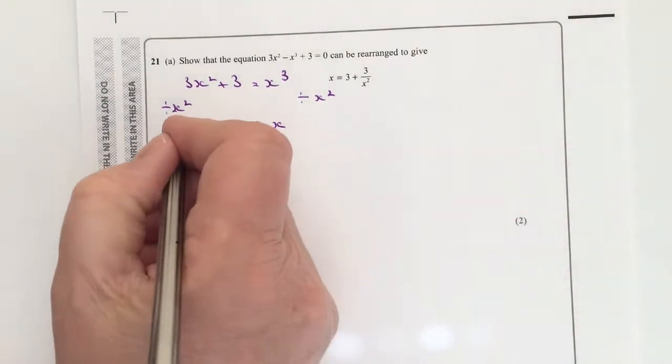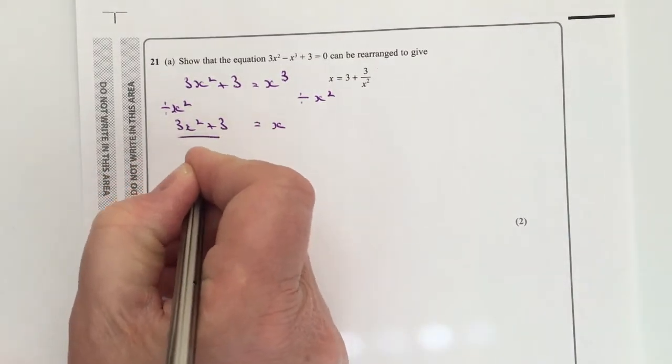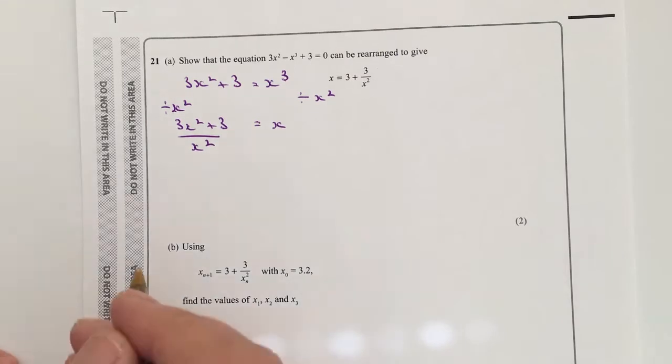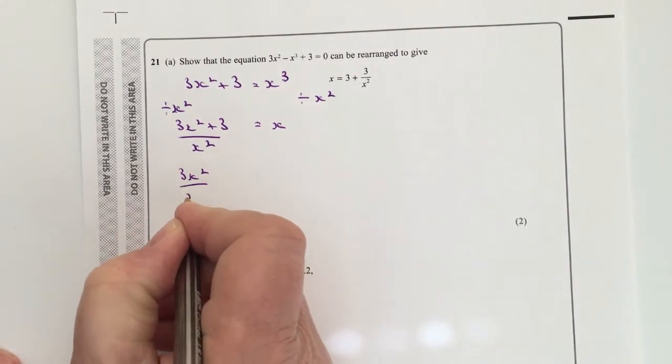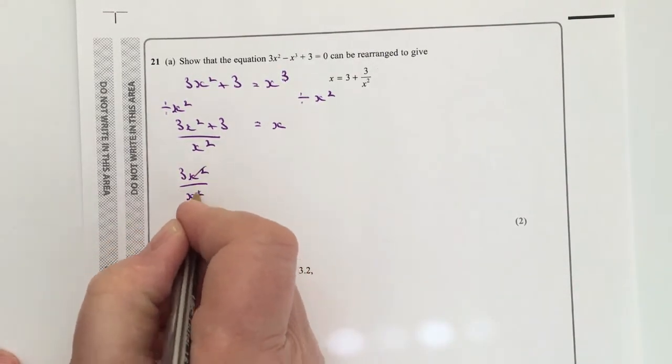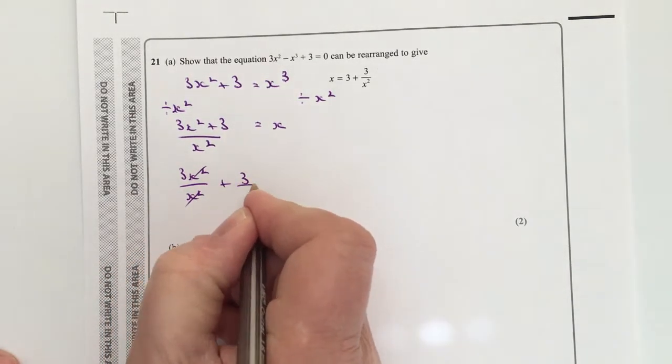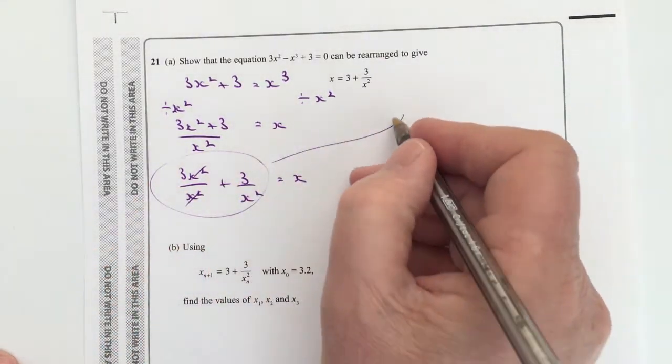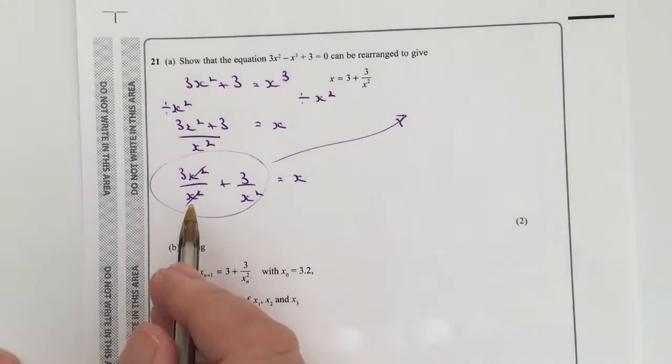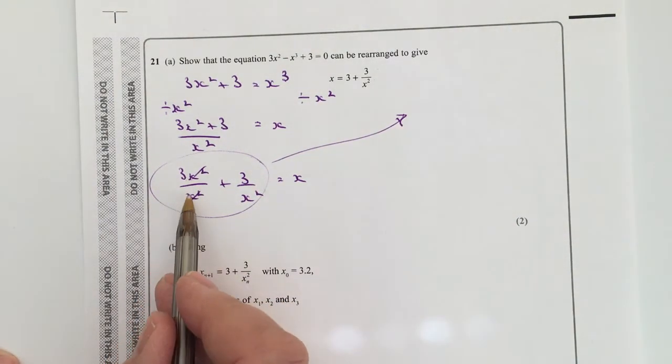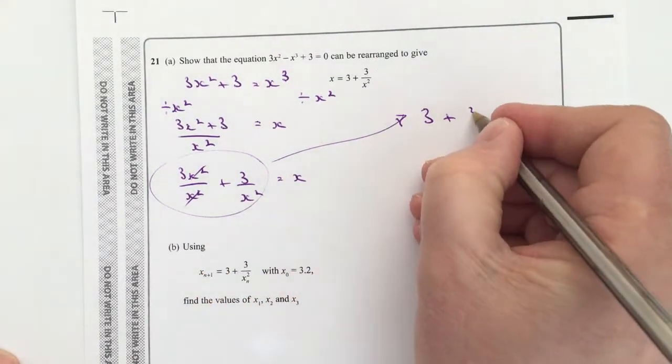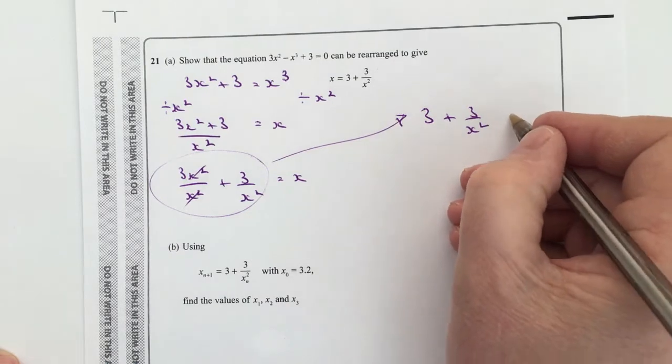On the left-hand side, I've got 3x squared plus 3 divided by x squared. Now it looks a little bit difficult at the moment, but if we just separate those out a little bit, I've got 3x squared over x squared, so those two cancel themselves out, and then I've got plus 3 over x squared, and that equals x. So if I write this whole thing a little bit tidier than I've written it there, it's going to be 3 on its own, which is what we're looking for, and then 3 over x squared. Okay, and that equals x.